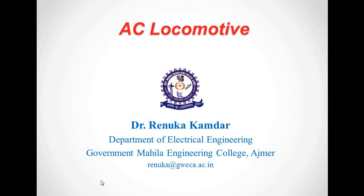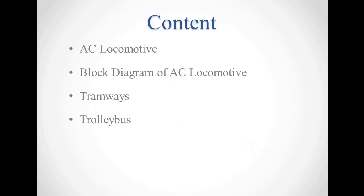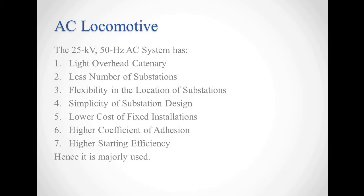In the last lecture we had discussed about the advantages of AC locomotive. The contents will be: AC locomotive, block diagram of AC locomotive, tramways and trolley buses. AC locomotive, as I said, is a locomotive which makes use of single phase 25 kV 50 Hertz AC system.